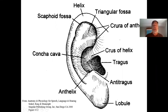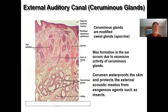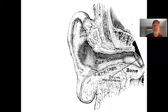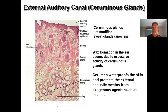Following the cursor: the outermost helix, then anti-helix, concha bowl, and tragus — don't worry about any of the others. The skin underneath the cartilaginous portion of the canal has lots of glands in it, and that's what produces cerumen. Earwax formation occurs due to excessive activity of these glands. Cerumen waterproofs the skin and protects the external ear canal from agents such as insects.